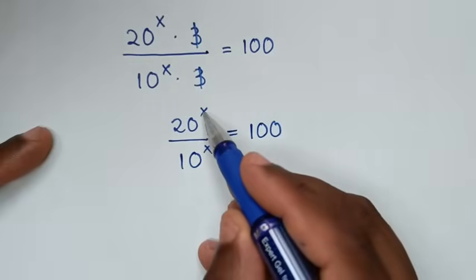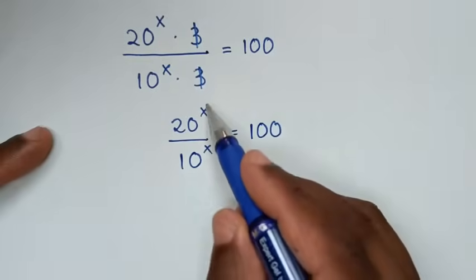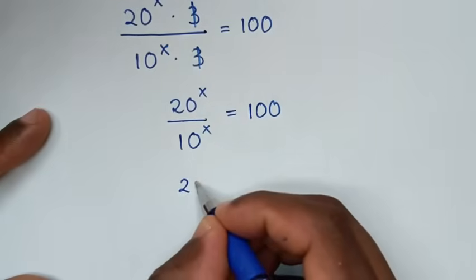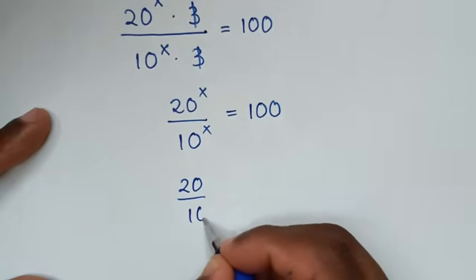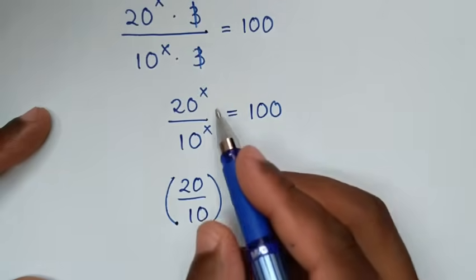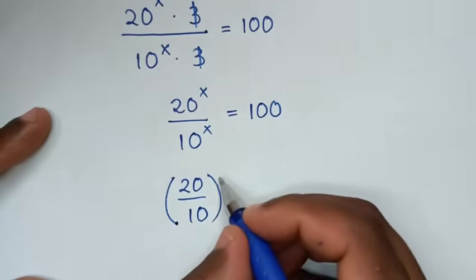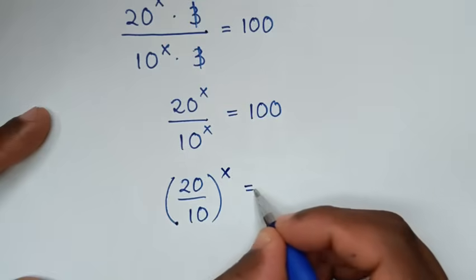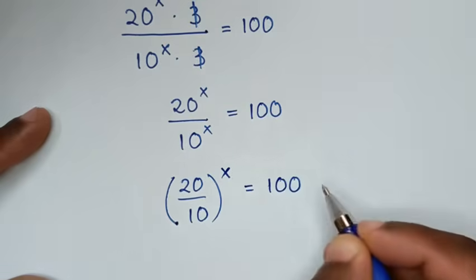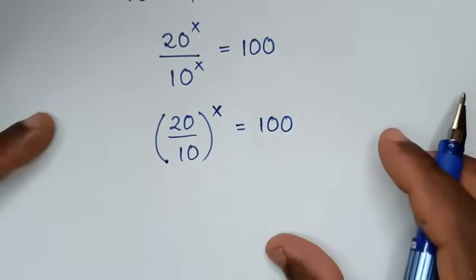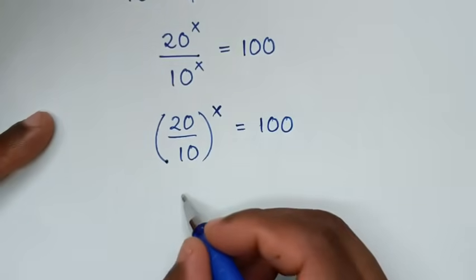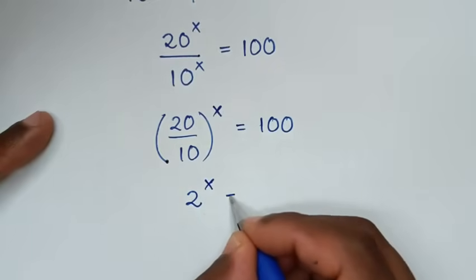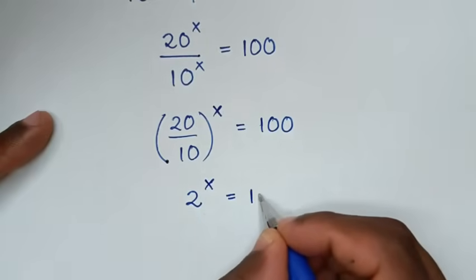Now, the power x is common, so 20 power x over 10 power x can be written as (20 over 10) power x, which gives us 2 power x is equal to 100.